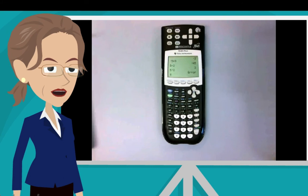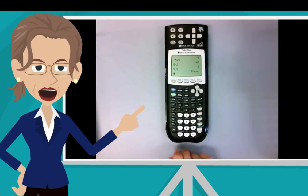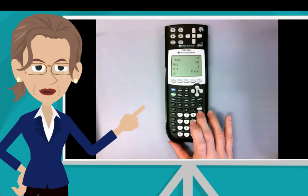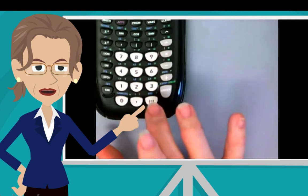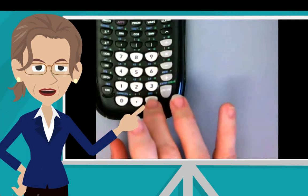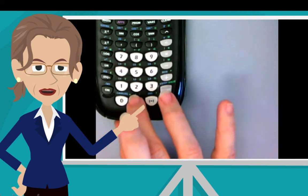Now let's do a problem using both the decimal and the negative symbol key. How about 5 times negative 8.3? Five. Multiplication symbol. Negative symbol. Now 8.3.